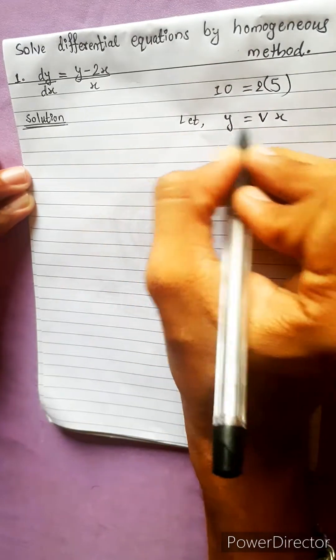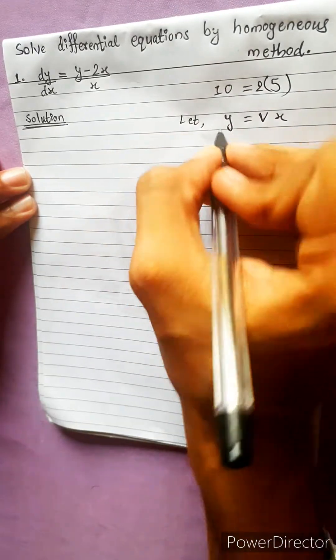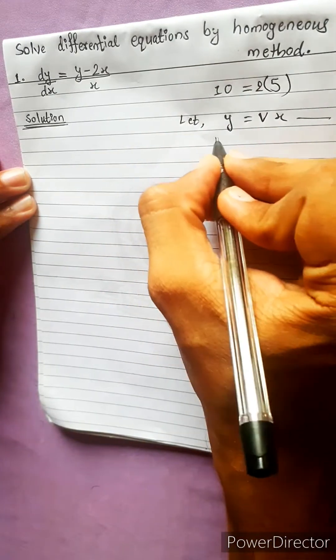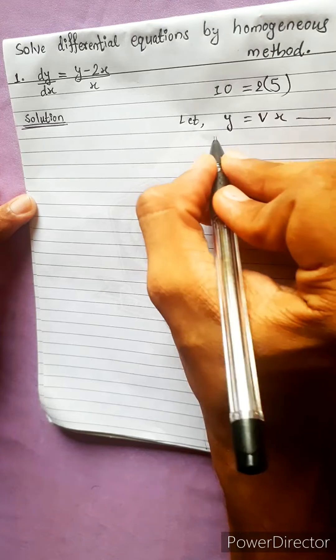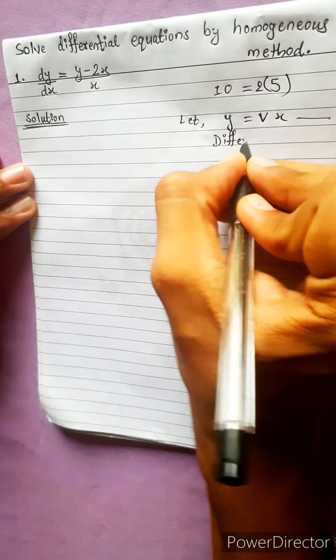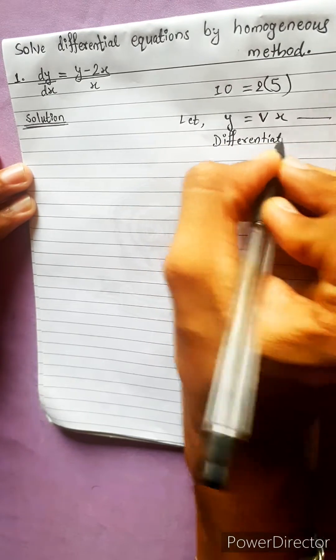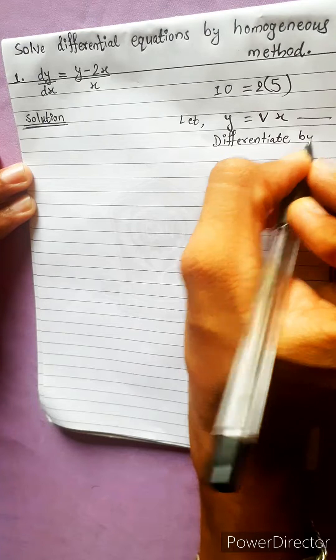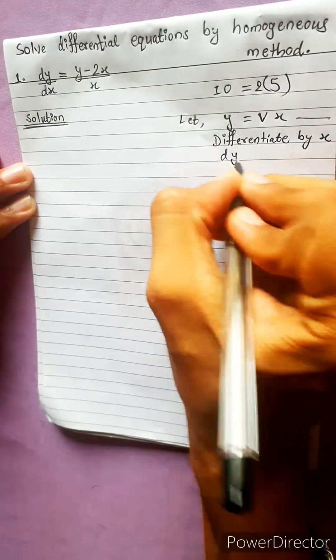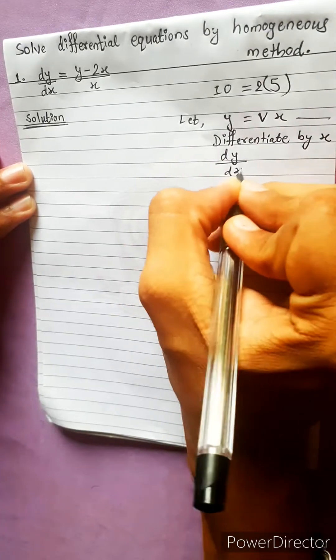Let y equal to vx. Let's differentiate. Differentiate by x. Then, dy by dx.